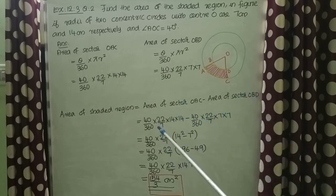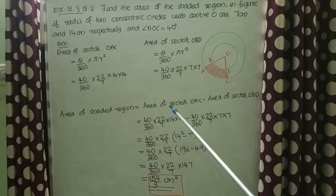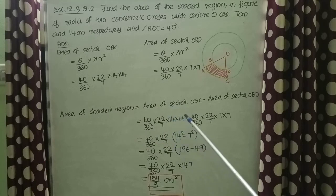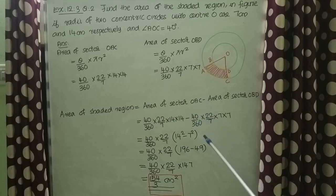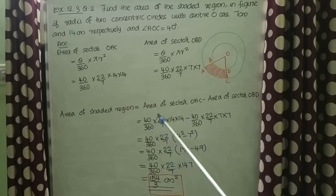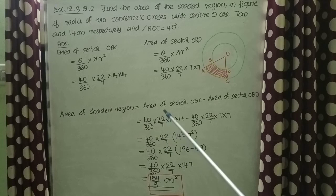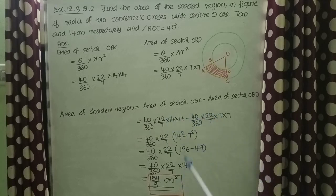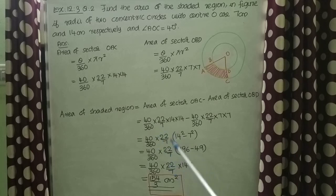That is equal to 40 by 360 into 22 by 7 into 14 into 14, minus 40 by 360 into 22 by 7 into 7 into 7. You can see that 40 by 360 into 22 by 7 is common for both terms. We can take it out of the bracket.